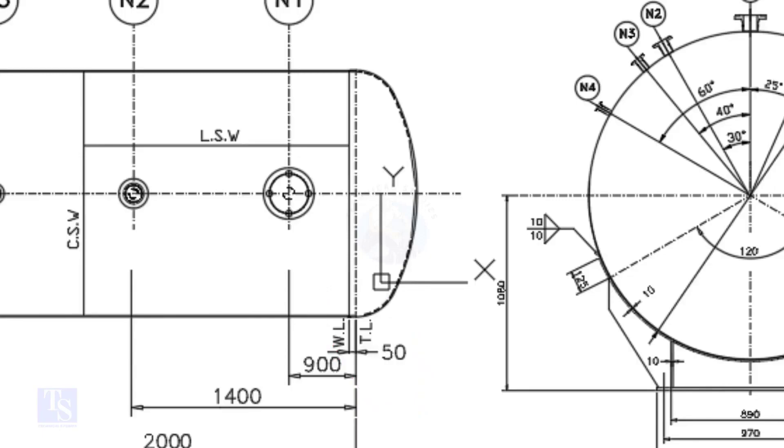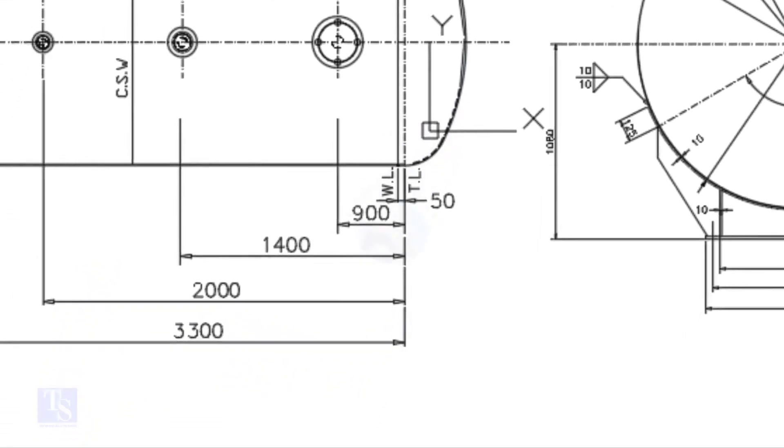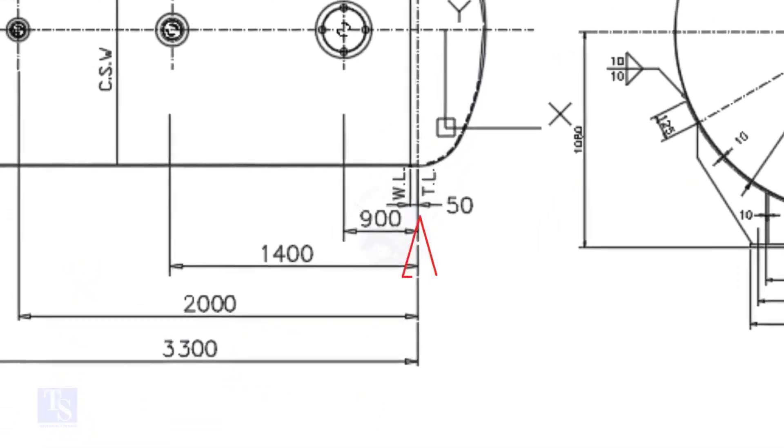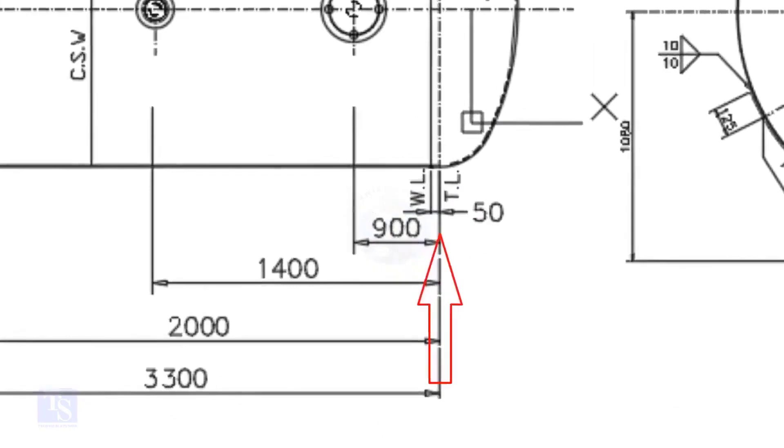In this drawing, the nozzle center distance is starting from the TL. In some drawings, you may see the nozzle center is given from the WL, so before starting the marking, carefully see these things.